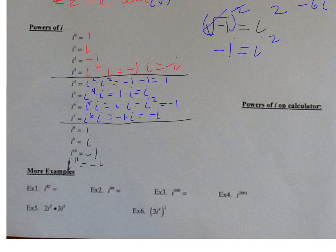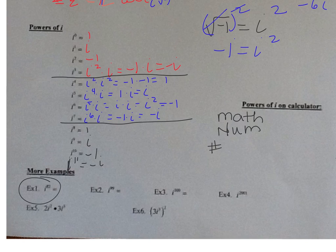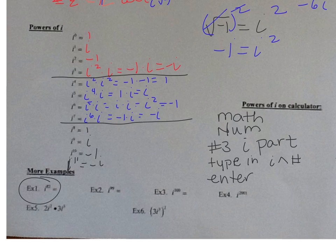We could do i to the 82, but we would have to divide by 4 and get the remainder. We can use our calculator for this. In your calculator, press math, go to the right over to NUM, and choose number three which says iPart. Then type in your i — the i is by the decimal key, second decimal — then the exponent, and press enter.